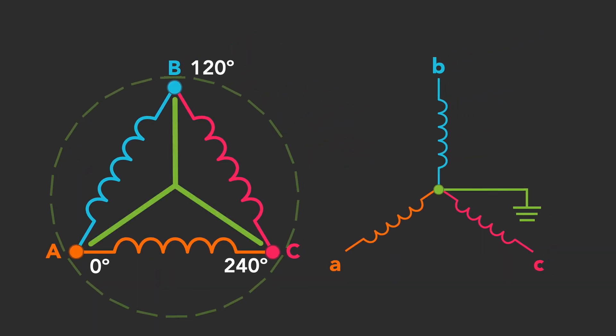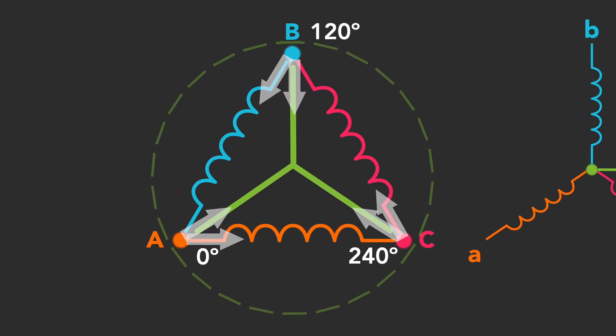Notice that at no point are the windings making up the delta one-line diagram parallel to the reference lines representing the Y one-line.